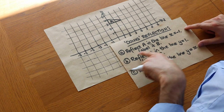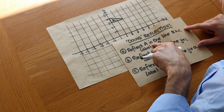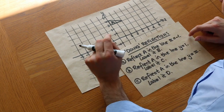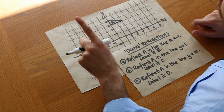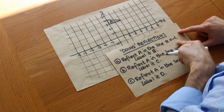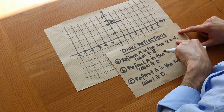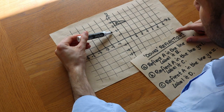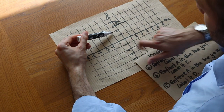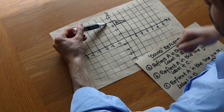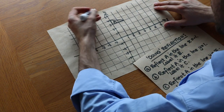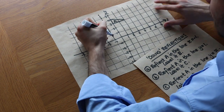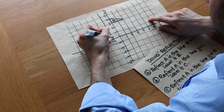Let's do the first one: reflect A in the line x equals minus one. To draw the line x equals minus one, we think of all points which satisfy this condition where the x value is equal to minus one. For example, the point minus one two and minus one four both have x value of minus one, and we can see it's all the points on this line cutting the x-axis at minus one.